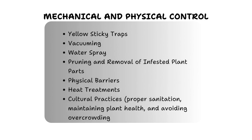Mechanical and physical control methods are essential components of integrated pest management strategies for whiteflies. Mechanical control involves physically removing whitefly-infested plant material, such as pruning heavily infested leaves or destroying severely affected plants. Vacuuming and shaking plants to dislodge whiteflies can also be effective. Barriers such as floating row covers can prevent whiteflies from accessing plants. Yellow sticky traps attract and capture adult whiteflies, helping to monitor populations and reduce their numbers.